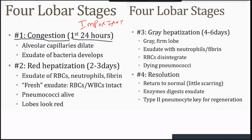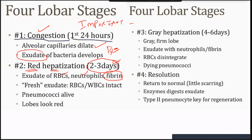Stage 3 is grey hepatization at four to six days: the lung still looks like liver but becomes grey, firm, and less red — no air inside. The exudate contains neutrophils and fibrin; RBCs begin to disintegrate, and pneumococci are dying. Stage 4 is resolution: return to normal. Enzymes digest the exudate, with little fibrous tissue formation. The type II pneumocytes are key for regeneration of normal lung tissue — MCQ.